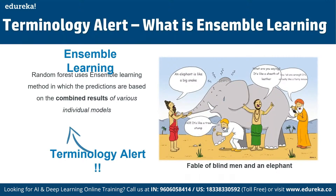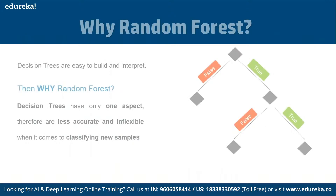Let's say we want to buy a house but we're unable to decide which one. We consult a few agents and they give us a list of parameters to consider before buying: price of the house, locality, number of bedrooms, parking space, and available facilities. These parameters are known as predictor variables, which are used to find the response variable.